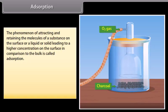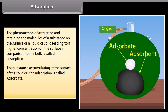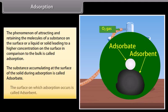The phenomenon of attracting and retaining the molecules of a substance on the surface of a liquid or solid, leading to a higher concentration on the surface in comparison to the bulk, is called adsorption. For example, when oxygen gas is taken in a closed vessel containing powdered charcoal, the pressure inside the vessel decreases due to adsorption of gas molecules on the surface of charcoal. The substance accumulating at the surface is called the adsorbate, and the surface on which adsorption occurs is called the adsorbent.